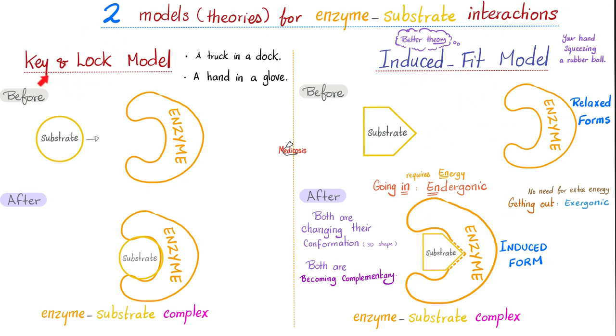Let's start with the old model. Key in a lock, a truck in a dock, a hand in a glove, substrate into an enzyme, and boom, that's it. Enzyme-substrate complex. The shape of the substrate did not change. This is the shape of the substrate before binding, and this is the shape of the substrate after binding. Same freaking shape. Similarly, the active site of the enzyme did not change its shape. This is the old model.